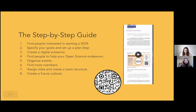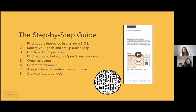Find people to support your open science endeavors — we have received a lot of support from researchers at our university and from outside it. Then organize events, which is a big part of what we do. Find more members, because organizing events can become a lot of work. Assigning roles and creating a team structure is also important, as is creating a future outlook.